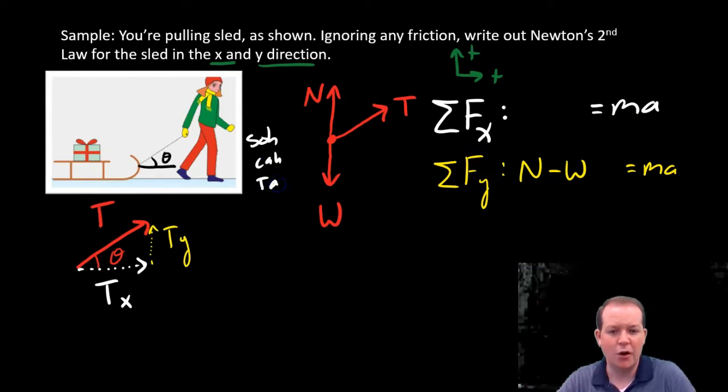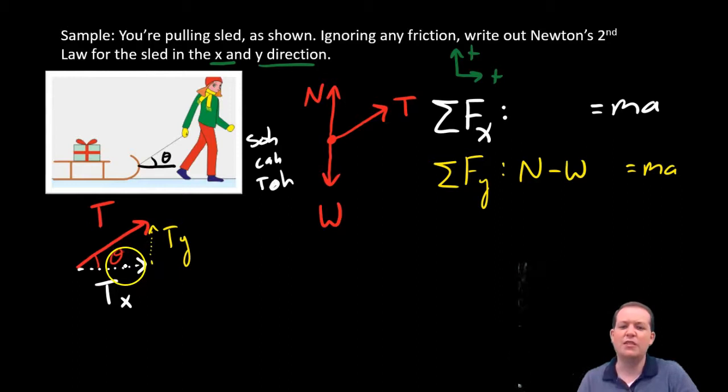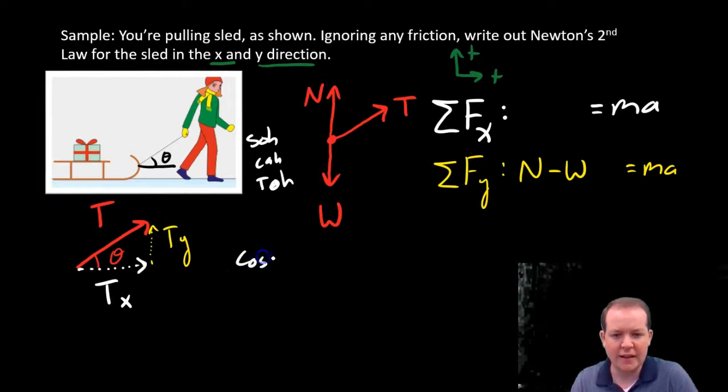You might have to bust out the old SOHCAHTOA. I've been doing this so long, I just kind of remember it. For the side that is adjacent, that's using the cosine version. So if I did cosine, that would actually get me that cosine of theta is equal to adjacent Tx divided by T. So what is Tx equal to? It's T times the cosine of theta.